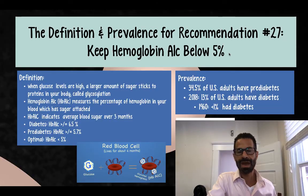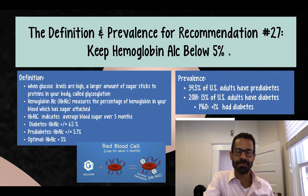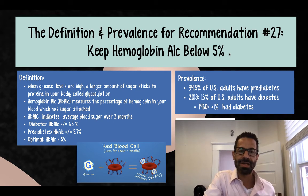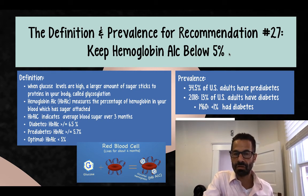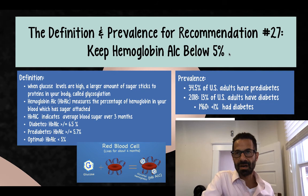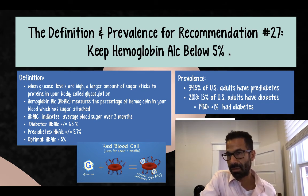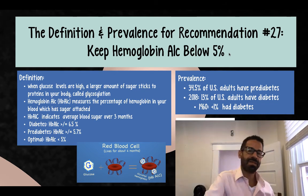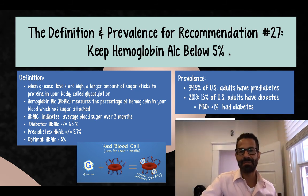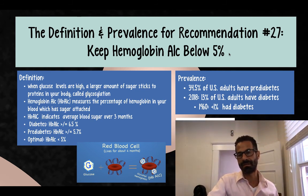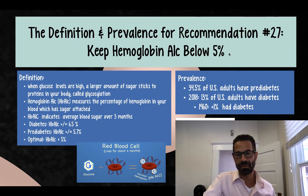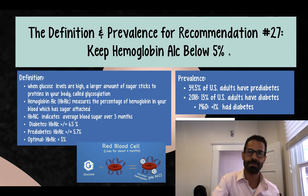We now have an understanding of what hemoglobin A1c measures and how it indicates average blood sugar over the past three months. We know the cutoffs for what's optimal versus pre-diabetes versus diabetes, and we see that there's an epidemic of onset of pre-diabetes and diabetes in the adult population over the past 60 years in the U.S.